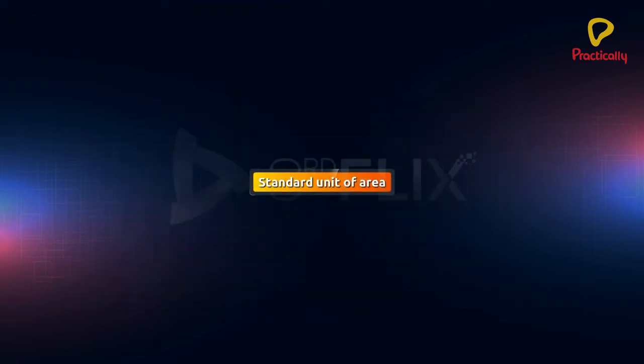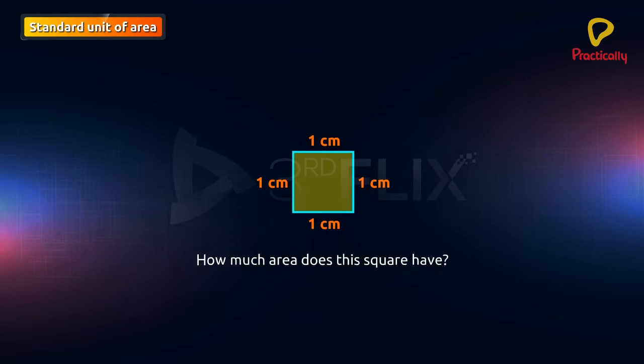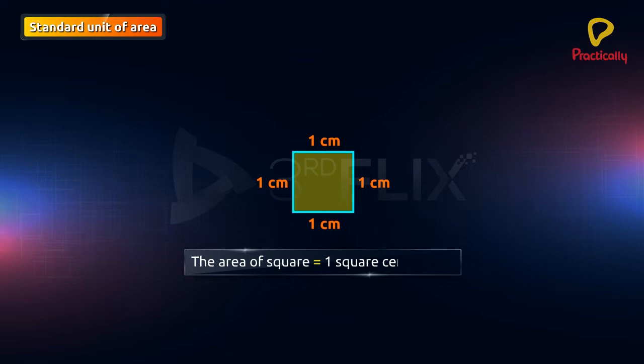Standard Unit of Area. Let us look at the square of 1 cm each. How much area does this square have? The area of this square is 1 cm².